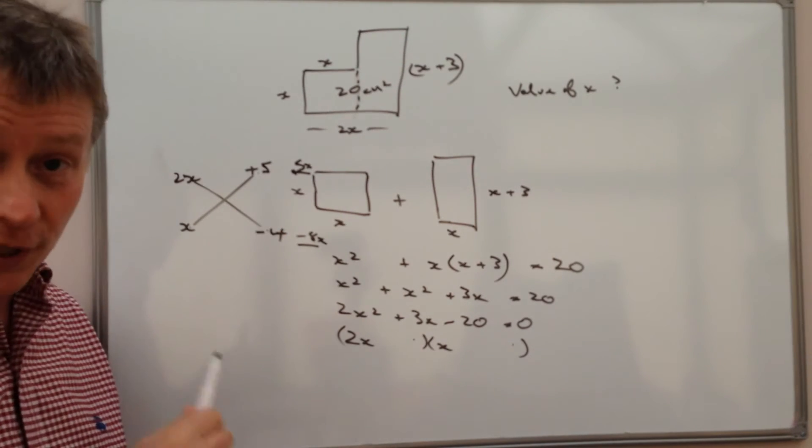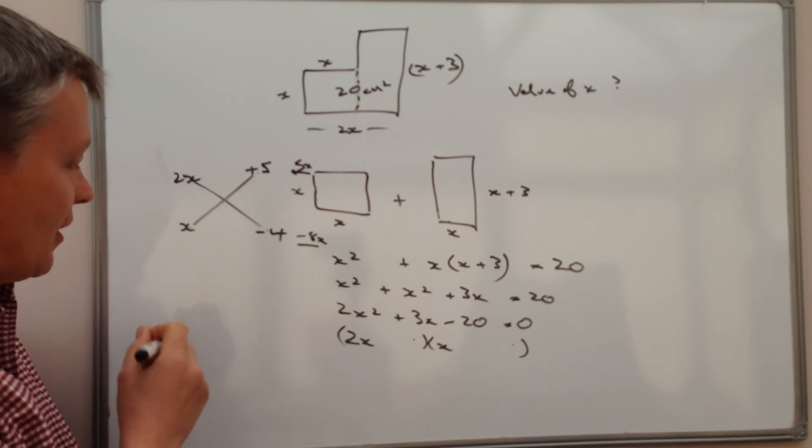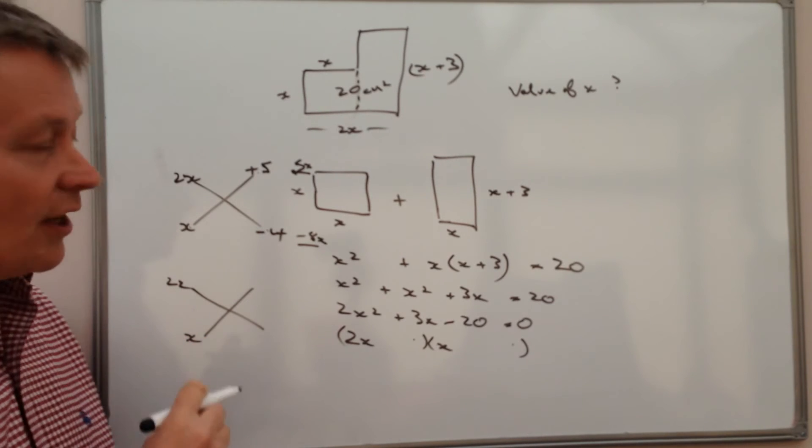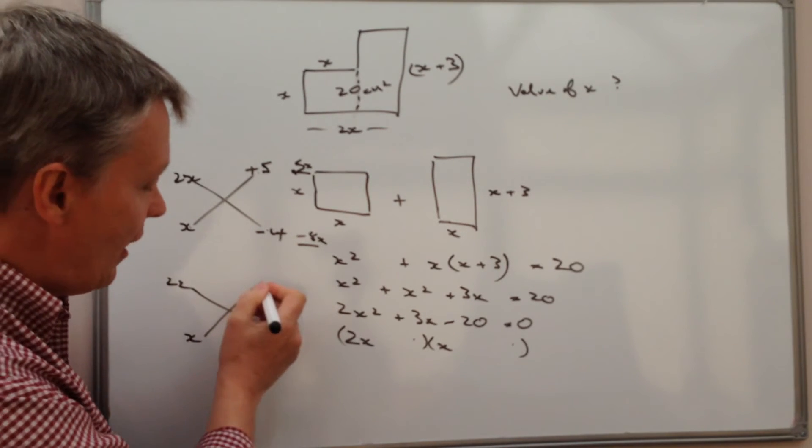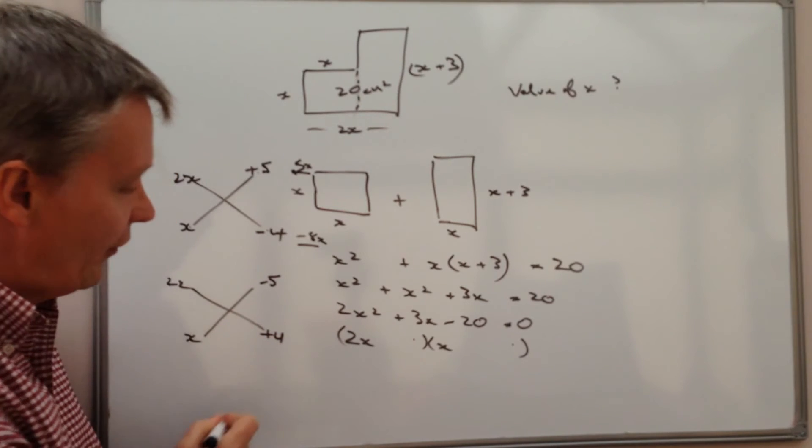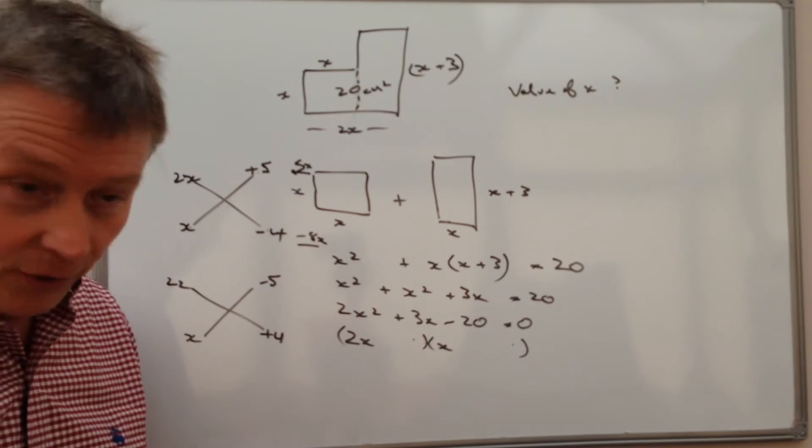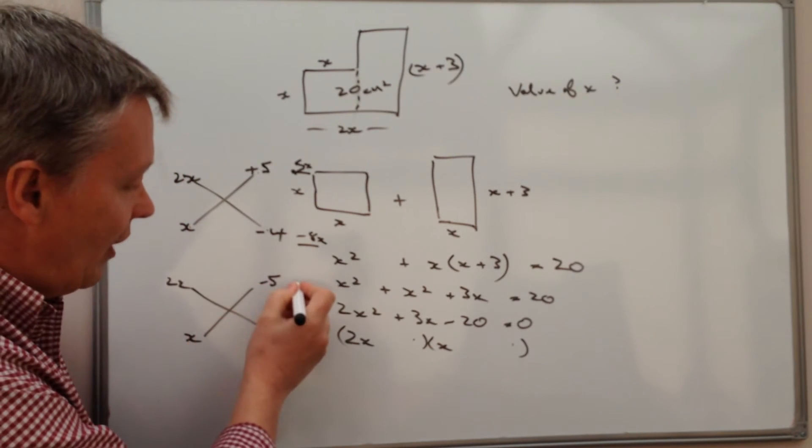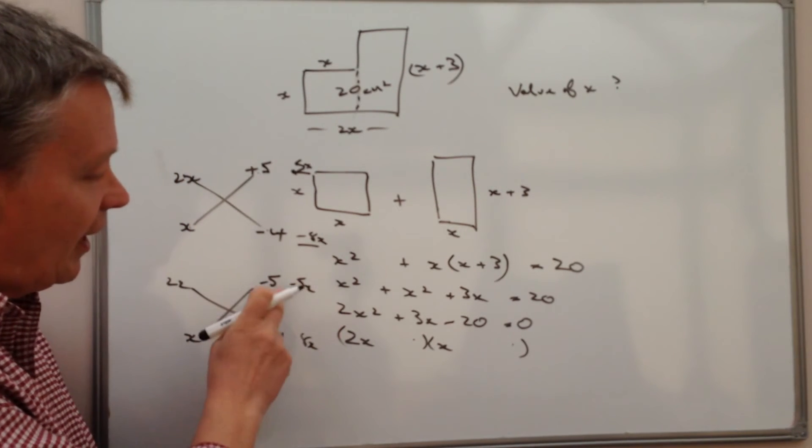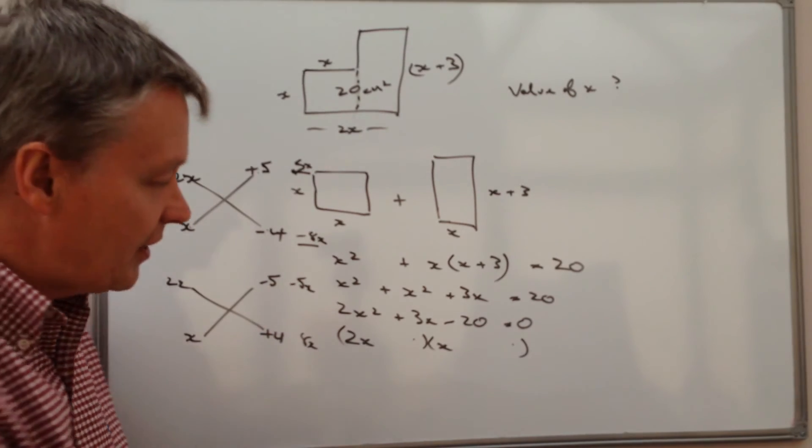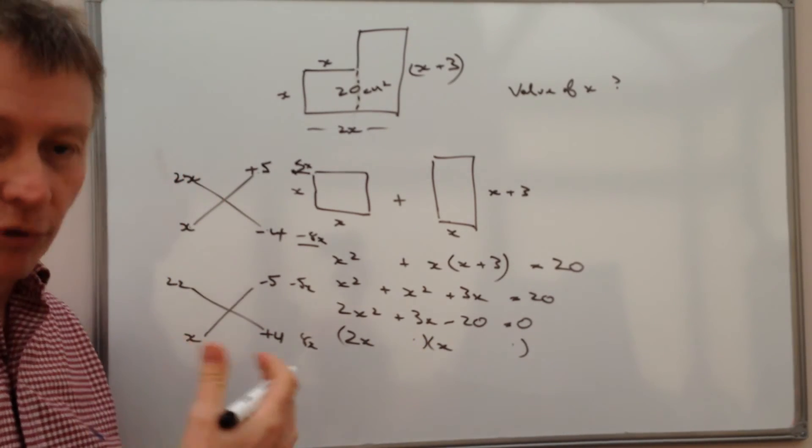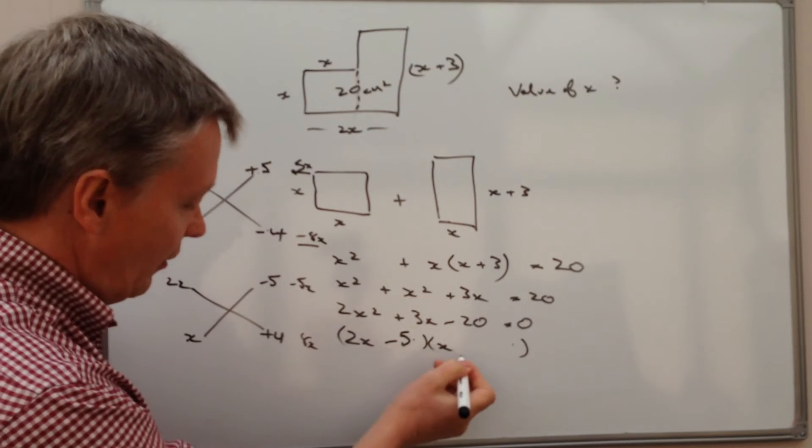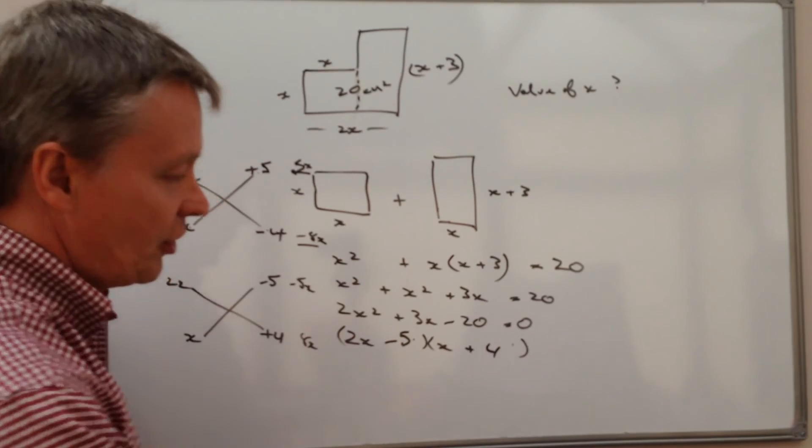But actually my instinct was right about 5 and 4 because I think now that actually if I turn it the other way round. So this time I'm going to have minus 5 at the top and plus 4 there. And again I cross multiply. I've got 2x plus 4 is 8x and then minus 5x. So that's brilliant. Add those two together. Minus 5 plus 8 is going to be plus 3. Brilliant. So I can now go ahead and write the correct numbers into the two brackets.